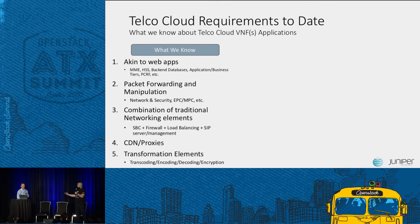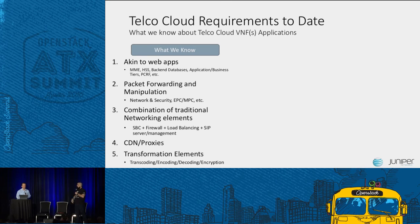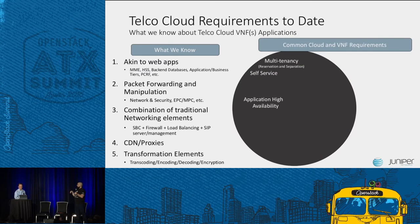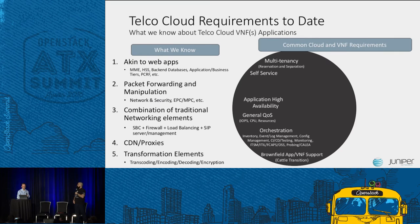Based on workloads today, it's akin to web applications, back-end databases, applications, PCRF, packet form manipulation. For a VNF, in some form or another we've got to manipulate a packet — a combination of traditional networking elements whether it's SBC, load balancing, SIP, back-to-back user agents. Things like CDN proxies and transformation elements are some of what we know from a VNF requirement point of view. What you'll see is we're trying to categorize common cloud and VNF requirements, which do overlap with traditional cloud-native applications and VNFs coming from the telco world, but we do see a very unique set of requirements coming from the VNFs as well.